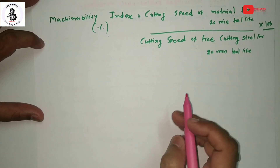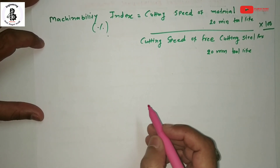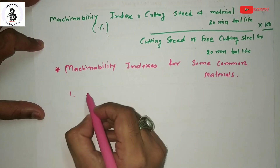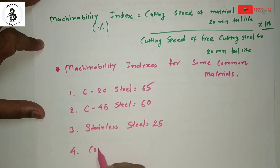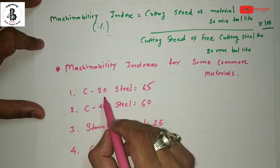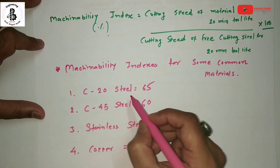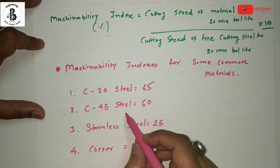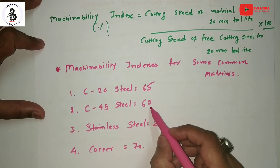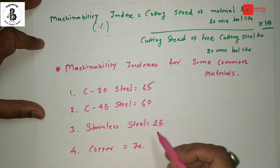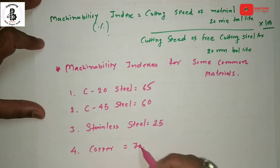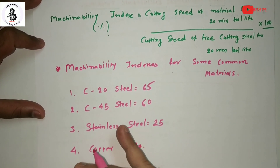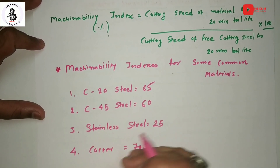Here are some example machinability index values. C20 steel has a machinability index of 65, C45 steel has an index of 60, stainless steel has an index of 25.5, and copper has an index of 70. These are the machinability index values given for these standard materials.